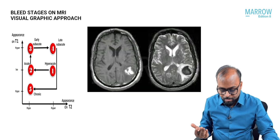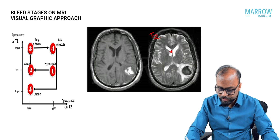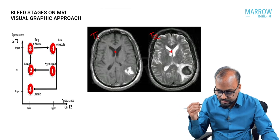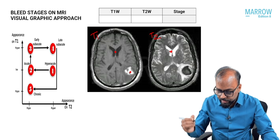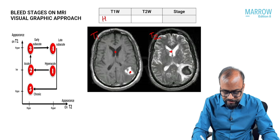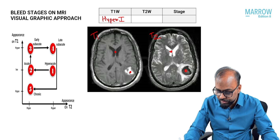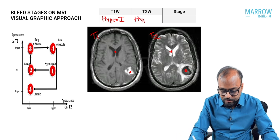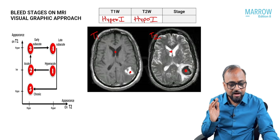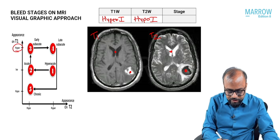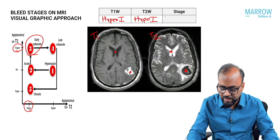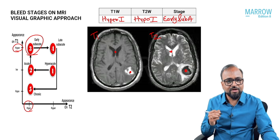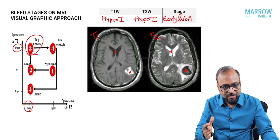Looking at the next image: water is bright on T2 and dark on T1. The bleed appears very bright on T1 — so hyper-intense — and very dark on T2 — so hypo-intense. On the graph, a lesion that is hyper-intense on T1 and hypo-intense on T2 corresponds to the early subacute stage. See how easy it becomes!